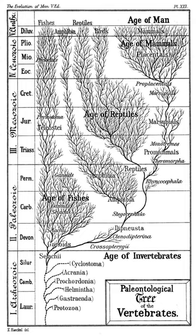Cuvier's theory of revolutions was later replaced by uniformitarian theories, notably those of James Hutton and Charles Lyell, who proposed that the Earth's geological changes were gradual and consistent. However, current evidence in the fossil record supports the concept of mass extinctions, and the general idea of catastrophism has reemerged as a valid hypothesis for at least some of the rapid changes in life forms that appear in the fossil record. A very large number of fossils have now been discovered and identified, serving as a chronological record of evolution.